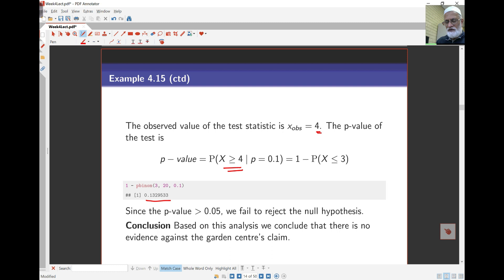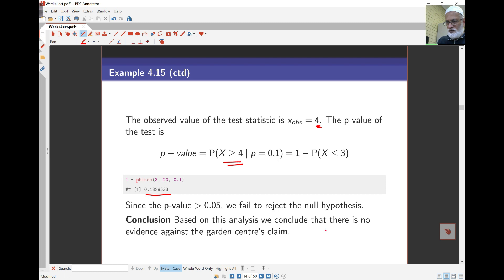The P-value is greater than 0.05, so we fail to reject the null hypothesis. If you look at the observed proportion, we had 4 out of 20. Ten percent would be 2 out of 20, so in the sample 20% don't germinate.